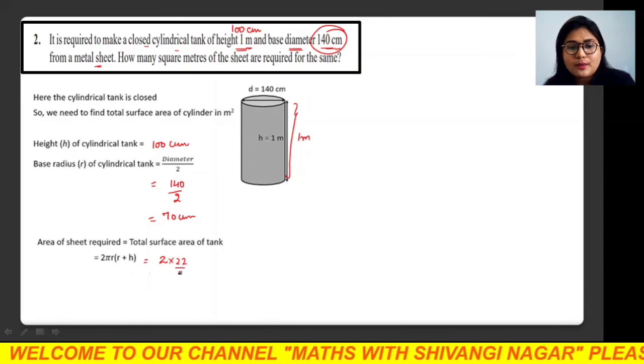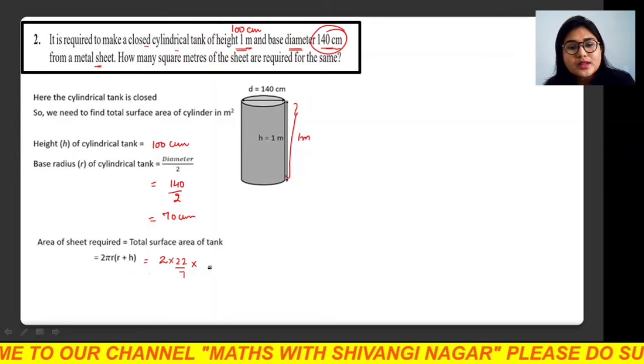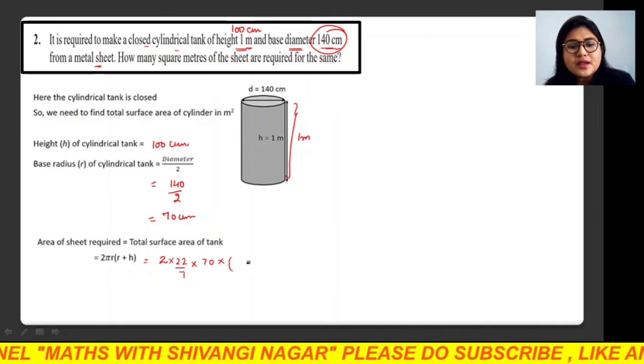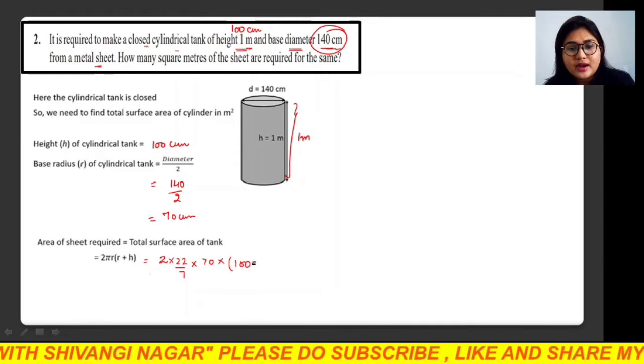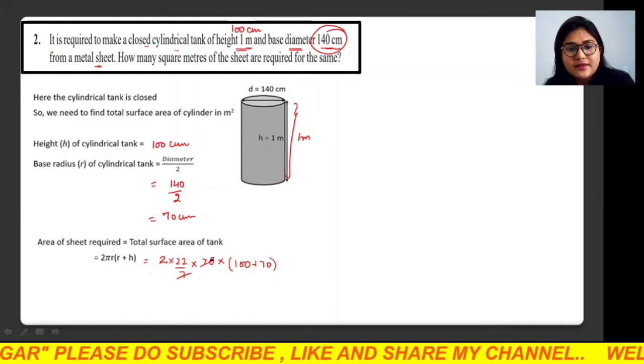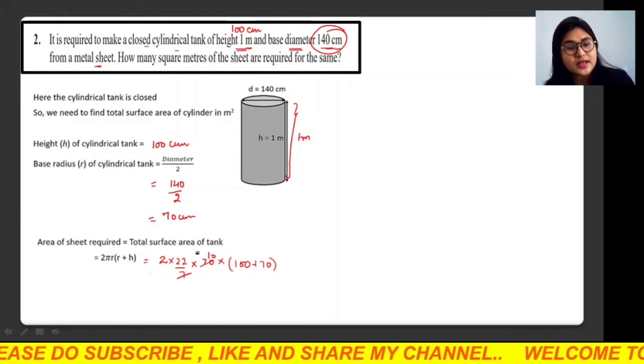So 2 × 22/7 × what is the radius? Radius is 70 × (r+h). r+h is what? Height is 100 and radius is 70. I have put all the values. Cancel this 7 with 70, how many times? 10 times.